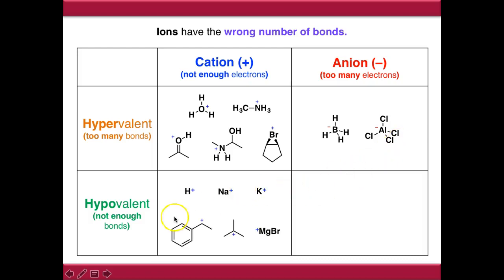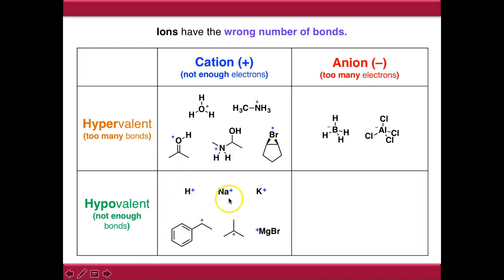Moving on to the hypovalent ions - the hypovalent cations - there are quite a few. H+ is the simplest example, but many of the metal ions such as sodium plus and potassium plus would ideally like to make one bond but aren't making any bonds, so therefore they are hypovalent.